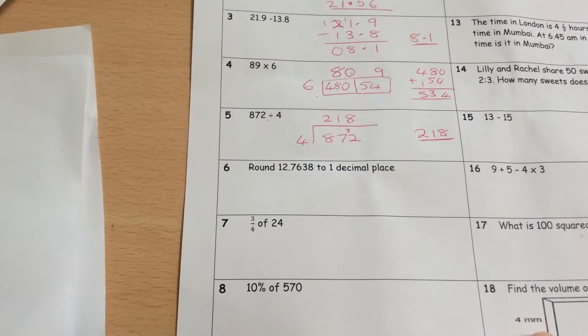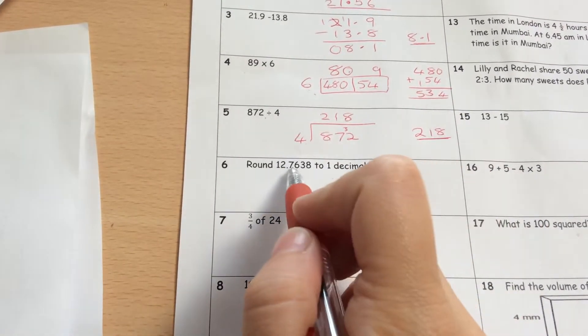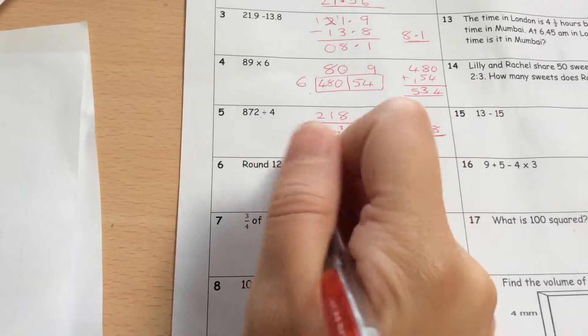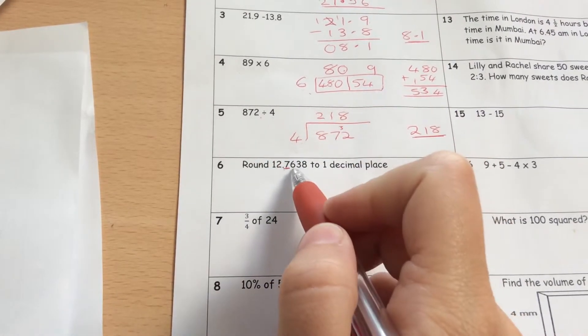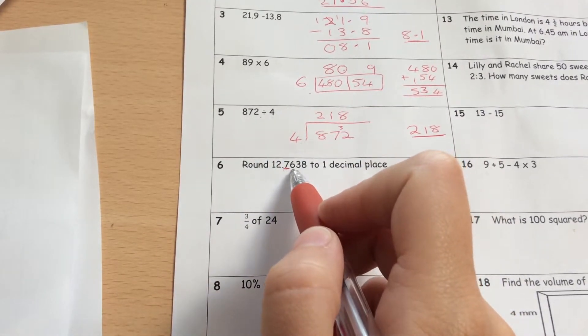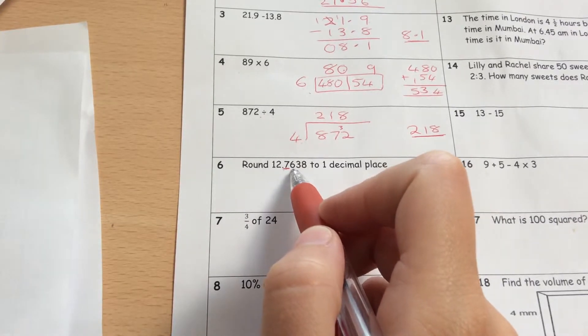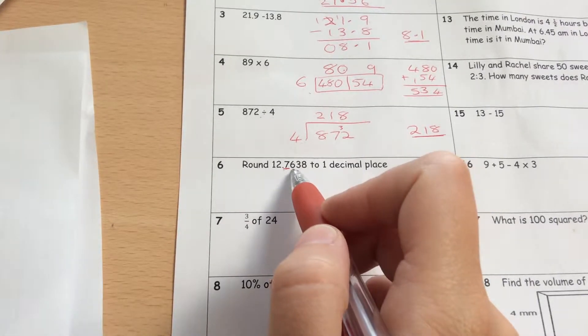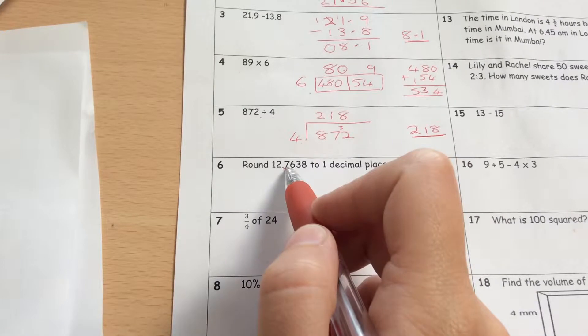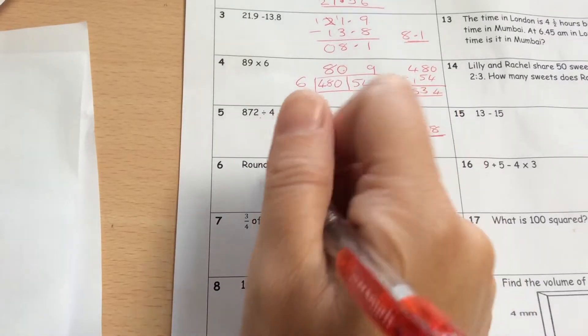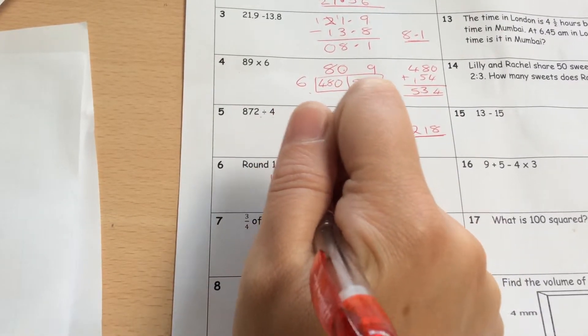Question 6, rounding to 1 decimal place. So I find my 1 decimal place and the rules for rounding is we always have to look next door. 5 or more we round up, less than 5 we round down. So because it's a 6, it's got to be rounded up. So it'll be rounded up to 8. So it'll be 12.8.